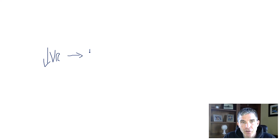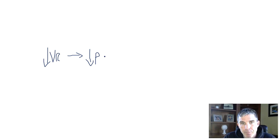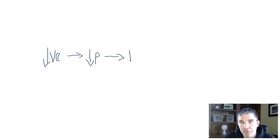When the venous return falls, that's going to decrease the preload to the left ventricle, because all that venous blood coming back to the heart is what becomes the preload to the left ventricle. Preload is one of the four determinants of cardiac output, so when preload falls, the cardiac output will fall. The other three determinants are heart rate, contractility, and afterload.